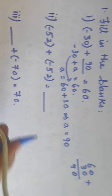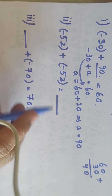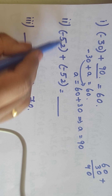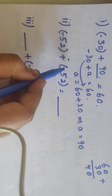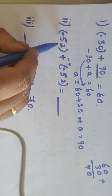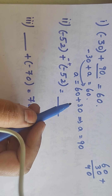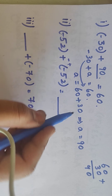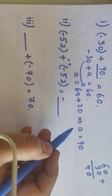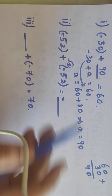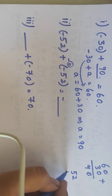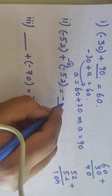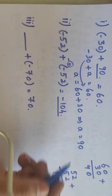Next: (-52) plus (-52). As usual, minus into plus is minus, minus into minus is plus. Compare the biggest number symbol — both numbers are the same, so we write minus. Now 52 plus 52: 4 carry 1, so 104. The answer is -104.